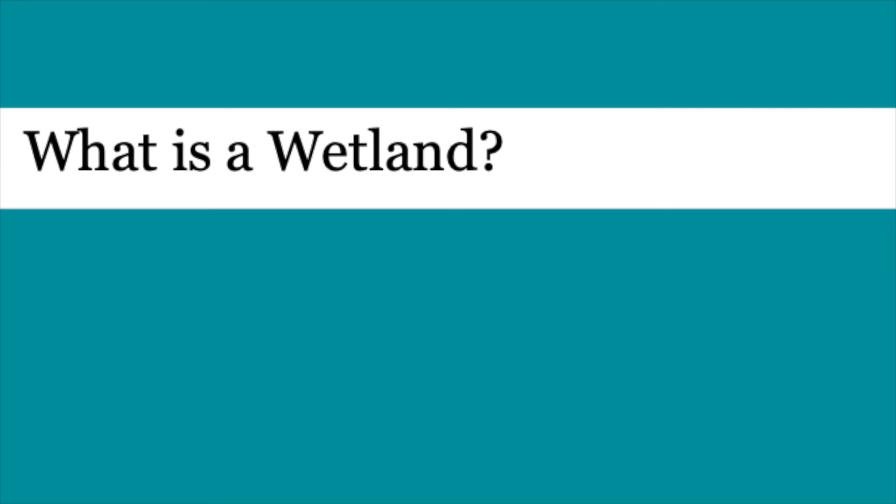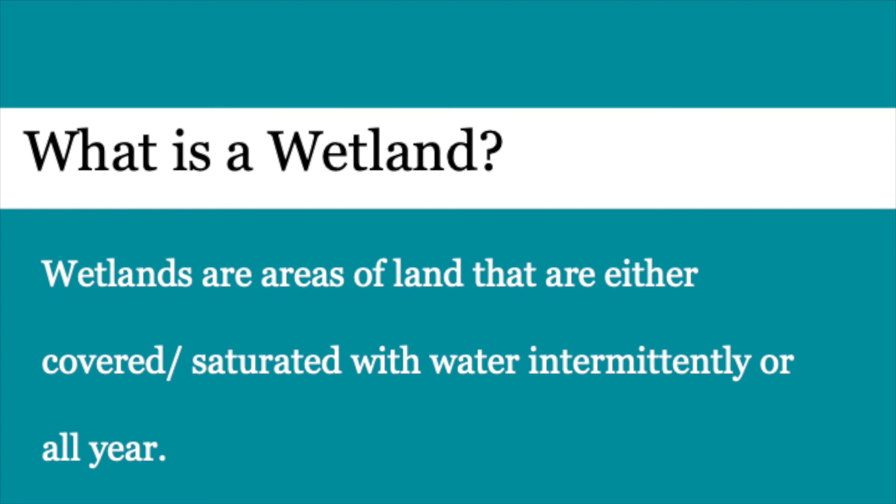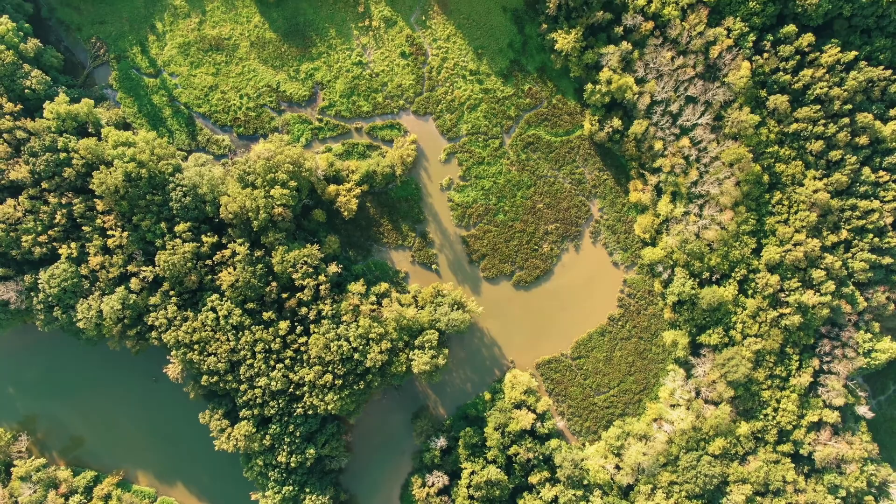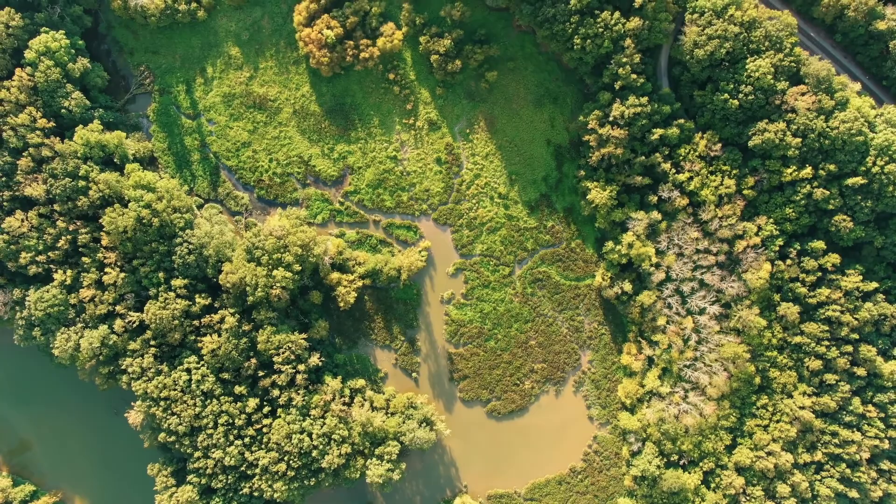What is a wetland? Wetlands are areas of land that are either covered or saturated with water intermittently or all year. Wetlands are transition zones, meaning that they are not totally dry land, nor are they completely underwater.